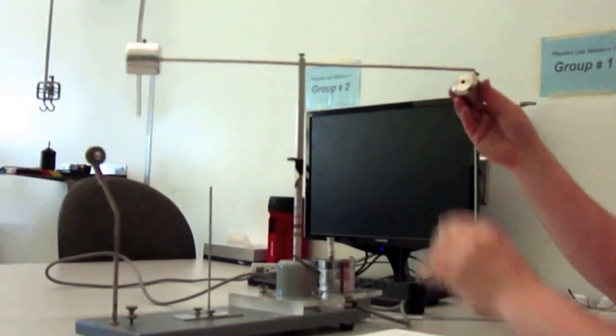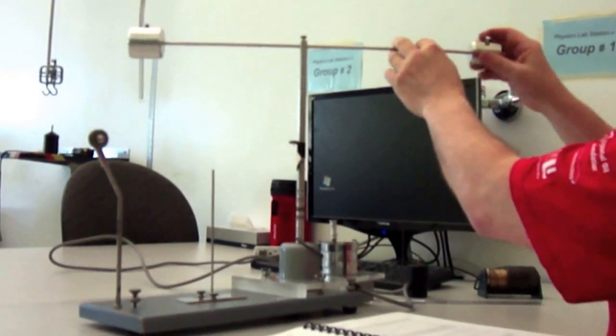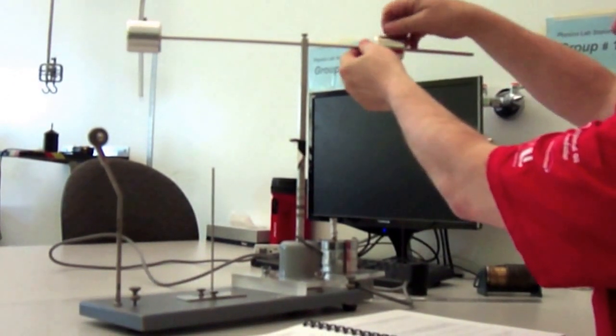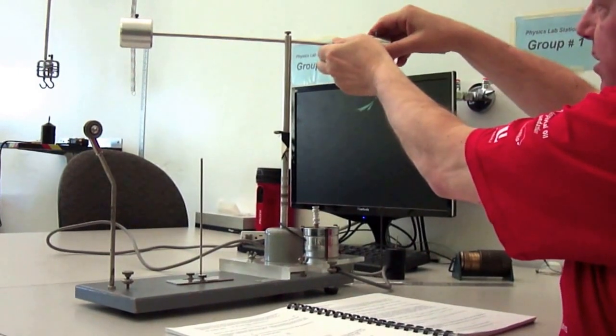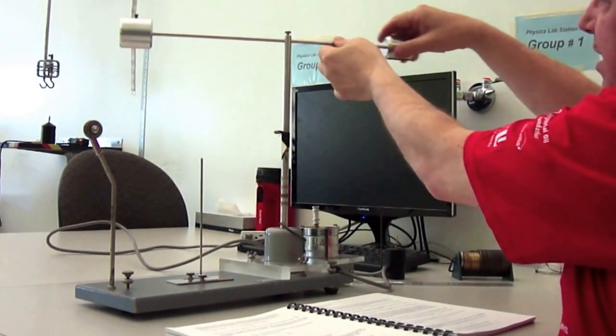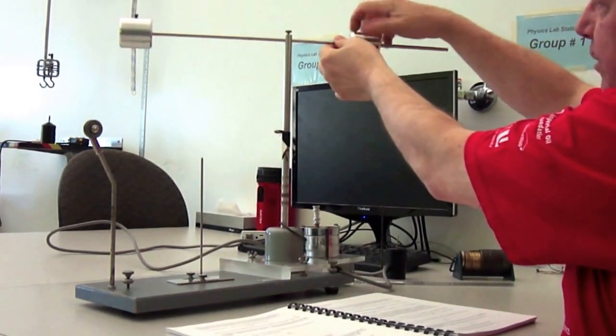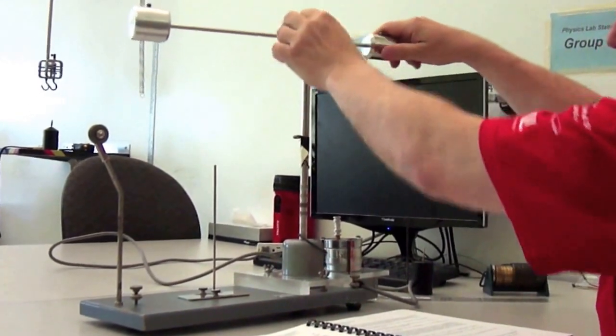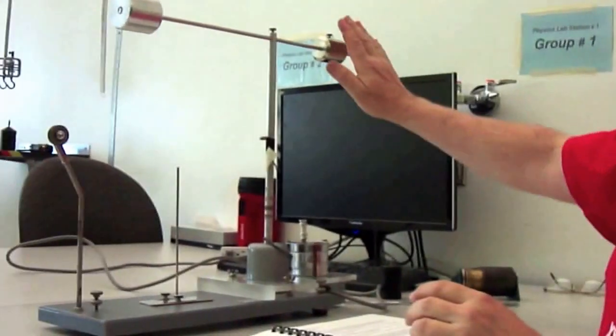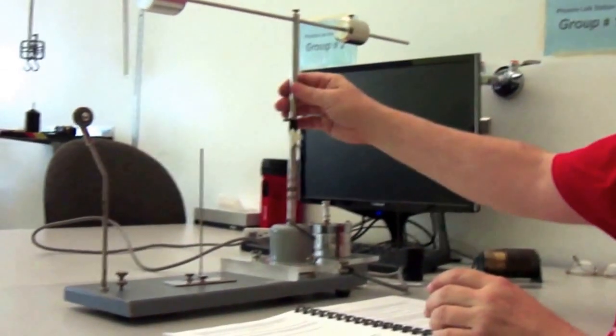Then we take the heavier mass and we attach it to the other end of the crossbar, but we attach it much closer to the vertical shaft. Why is this? Because this is much heavier.